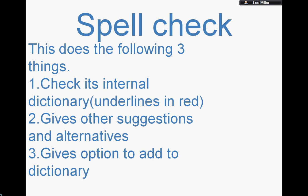Spell check: this does three of the following things. Checks its internal dictionary, underlines the wrong thing in red, gives other suggestions on alternatives and gives the option to add to the dictionary.